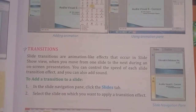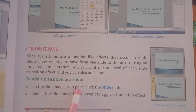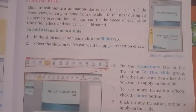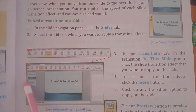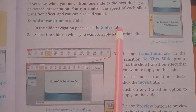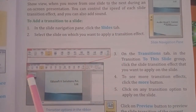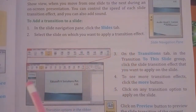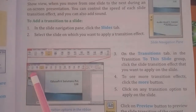In step 1, in the slide navigation pane, click the slide tab. In step 2, click on the slide on which you want to apply a transition effect. Choose which slide you want to apply the transition effect to.